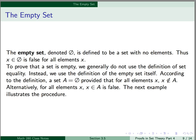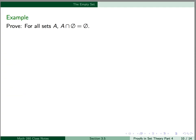To prove that a set is empty, we generally do not use the definition of set equality. Instead, we use the definition of the empty set itself. A set A equals the empty set provided that for all elements x, x is not an element of A. The next example illustrates this procedure: suppose we want to prove for all sets A, A intersect the empty set equals the empty set. Our symbolic form is: for all A, A intersect the empty set equals the empty set.